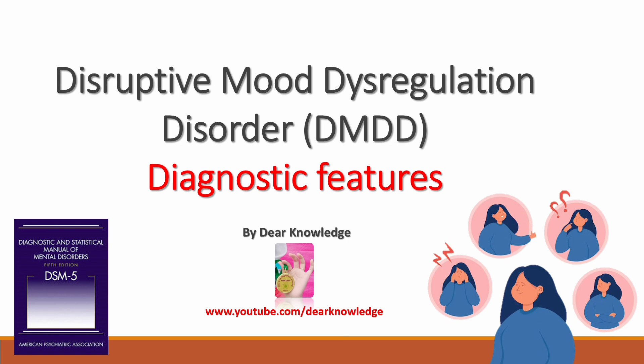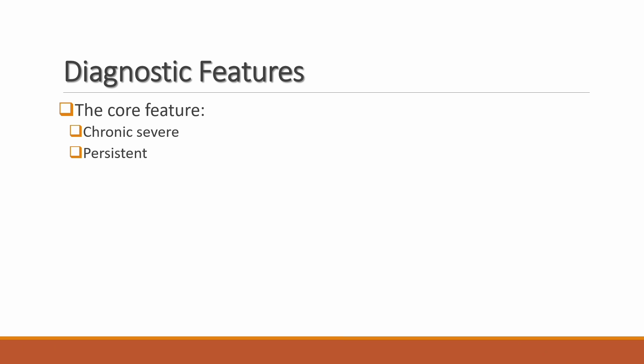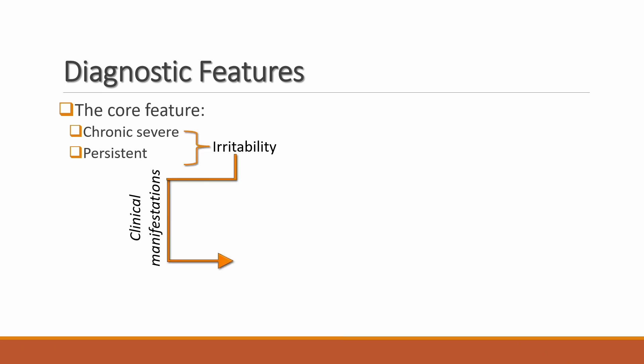This video is about the diagnostic features of Disruptive Mood Dysregulation Disorder, abbreviated as DMDD. The core feature of DMDD is chronic, severe, persistent irritability, and this irritability has two prominent clinical manifestations.